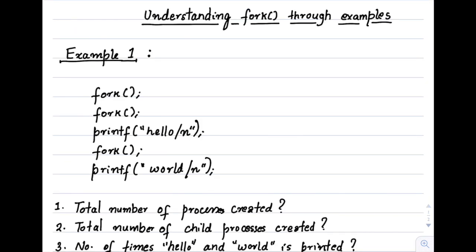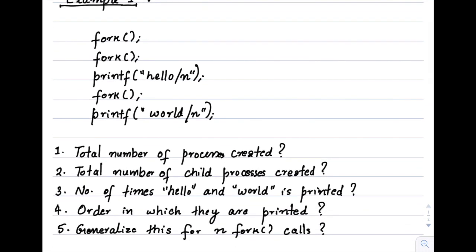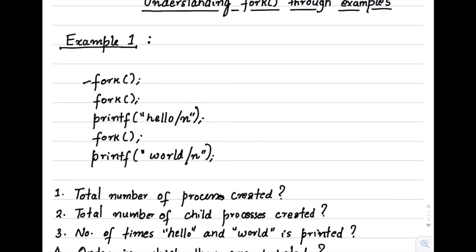Let's now look at the first example and try to answer five questions. We have three fork statements — F1, F2, and F3 — and two print statements. The first question is: what is the total number of processes created? The second is: what is the total number of child processes created? Note the difference between these two questions. I will name the forks F1, F2, and F3 in my diagrams so I can track which point of the code each node represents.